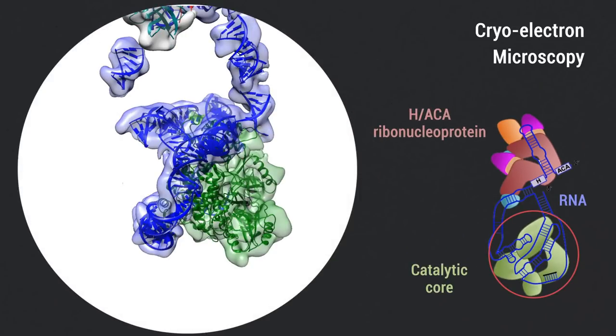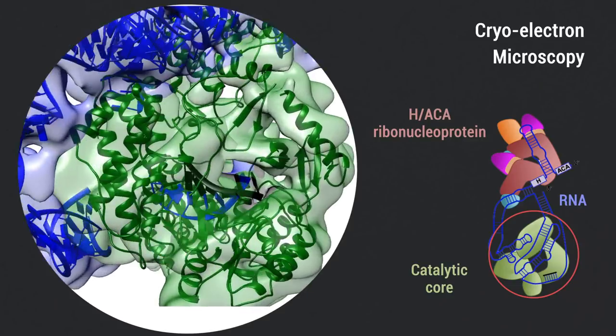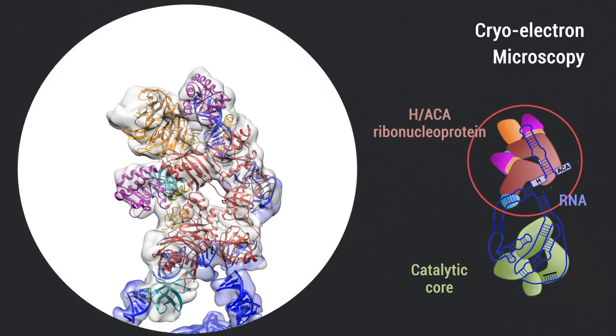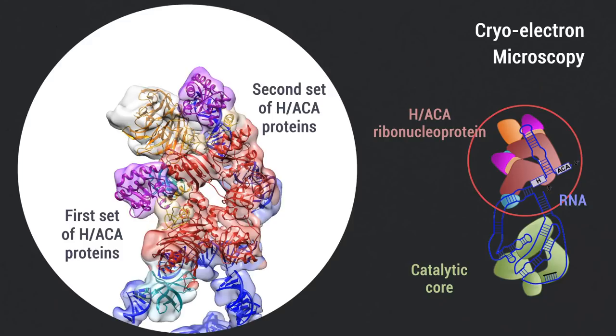In the catalytic core, RNA encircles telomerase reverse transcriptase, adopting a well-ordered tertiary structure with surprisingly limited protein-RNA interactions.